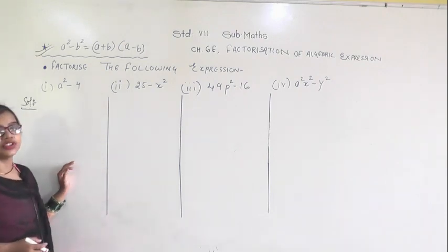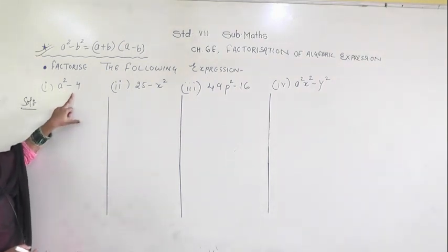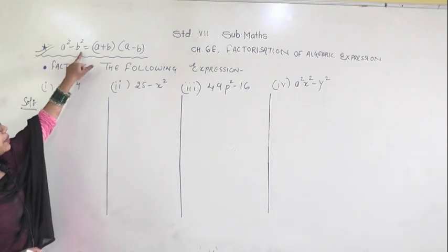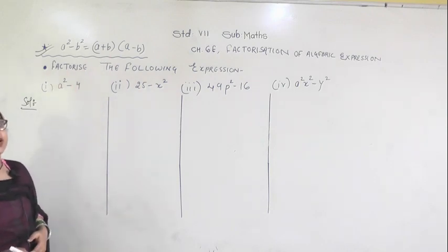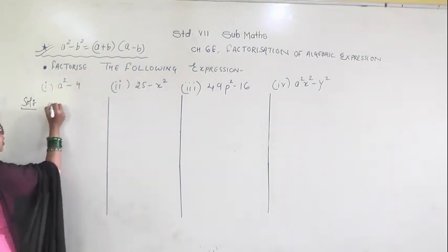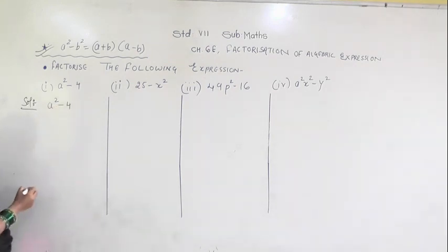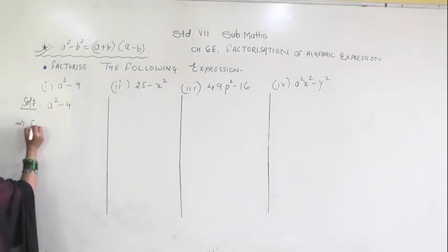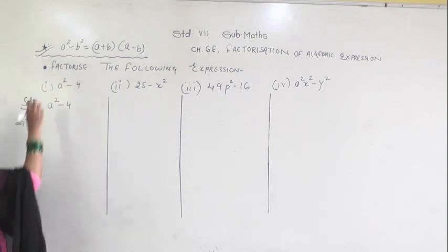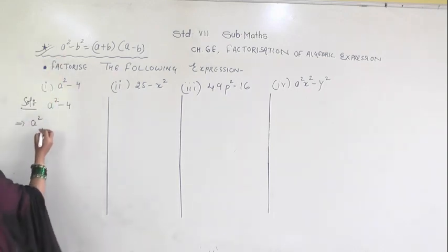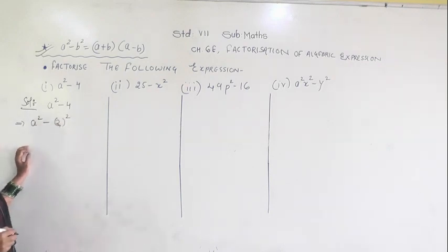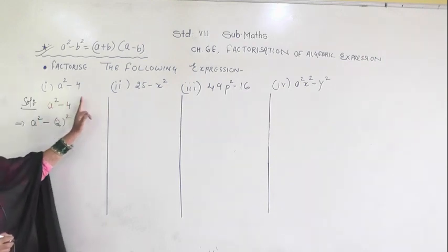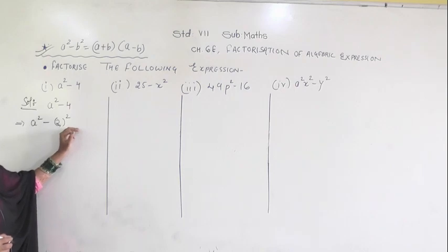Let's see the first question. You are given a squared minus 4. First, we have to convert this into the form of a squared minus b squared, then only we will use the identity (a plus b)(a minus b). So the question is a squared minus 4. I can write this as a squared minus 2 squared, since 2 squared is 4. So now I can use the formula.